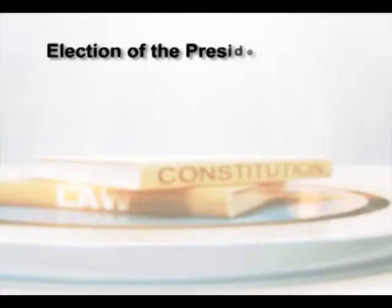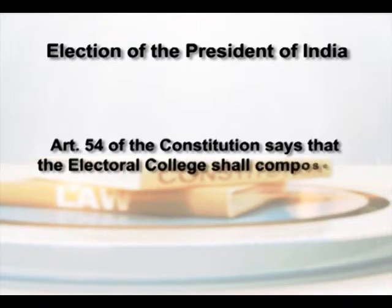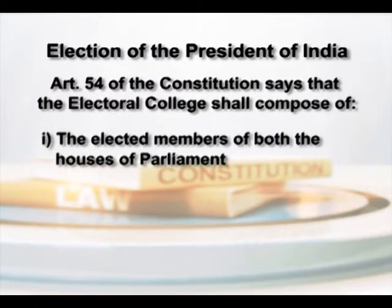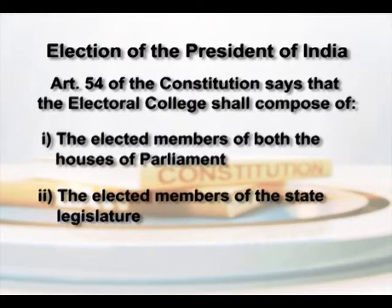This implies that once elected as President, the seat in the legislature is likely to be vacated from the day on which the person assumes the office of the President of India. The procedure for election of the President is mentioned in Articles 54 and 55 of the Constitution. The President is elected by an indirect election through an Electoral College in accordance with the system of proportional representation by means of a single transferable vote. Article 54 declares that the Electoral College shall be composed of the elected members of both Houses of Parliament, and the elected members of the state legislature.